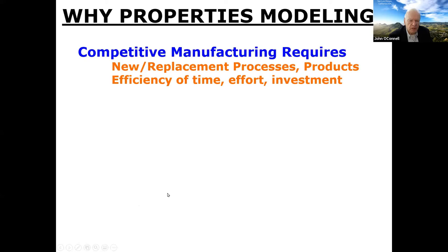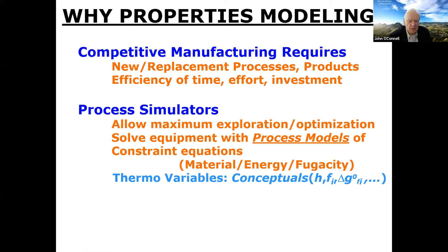Why do we do properties modeling? Competitive manufacturing requires new or replacement processes and products, and efficiency in time, effort, and investment. We use process simulators now — they were just beginning in the 1970s and came along in the 80s, but now everybody uses them. The joy is that you can do maximum exploration and optimization. Process models use constraint equations of material, energy, and fugacity, which come from the laws of thermodynamics.